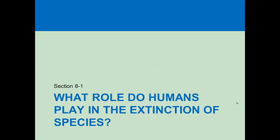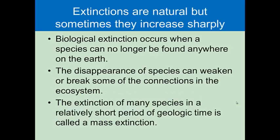Section 1 is asking what role do humans play in the extinction of species. The first thing we should talk about is biological extinction. Extinction is when a species is no longer found on the Earth. It can weaken or break connections within the ecosystem. In our three principles of sustainability, we talk primarily about biodiversity, chemical cycling, and solar energy.